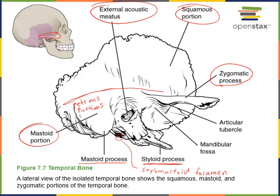Another major feature of the temporal bone is the mandibular fossa, an articular surface that articulates with the mandible — our lower jaw. A specific part of the mandible, known as the condylar process, fits into the mandibular fossa of the temporal bone, forming the only joint of the skull that allows the jaw to open and close.